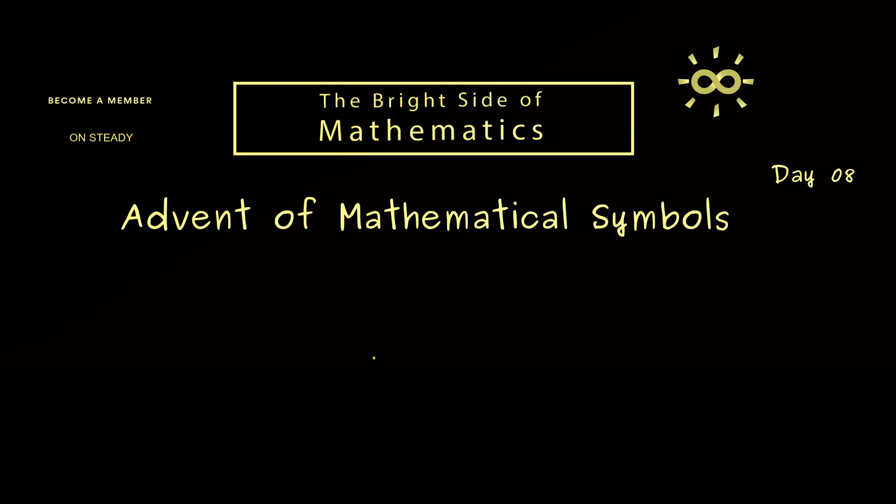The mathematical symbol of today is the product symbol, written with a capital pi. And in the same way as we have it for the sum symbol, we use an index below the letter pi.